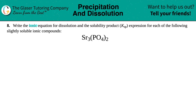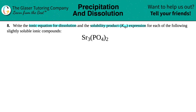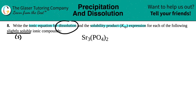Number eight: write the ionic equation for dissolution and the solubility product (Ksp) expression for each of the following slightly soluble ionic compounds. We have strontium phosphate, Sr₃(PO₄)₂. If an ionic compound is slightly soluble, it stays at equilibrium as a solid — only a little bit breaks down into its ions. Dissolution means dissolving, breaking down into the two ions.